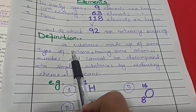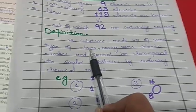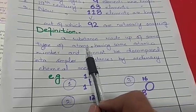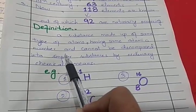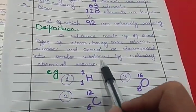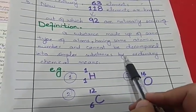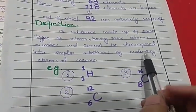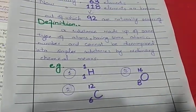As for the definition of the element — what is the element? The element is a substance made up of the same type of atoms. It is a substance that cannot be decomposed into simpler substances by ordinary chemical means — that is, we cannot break them down by ordinary methods.